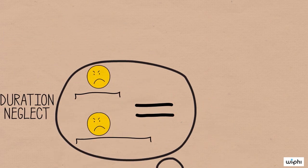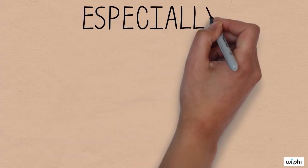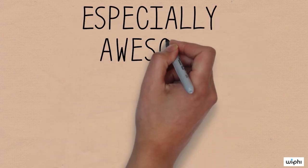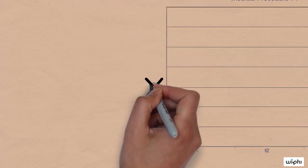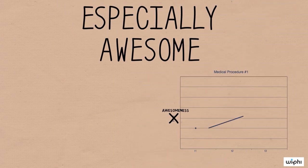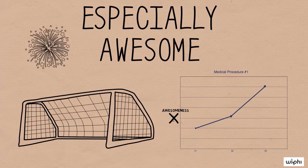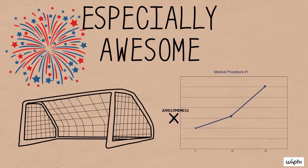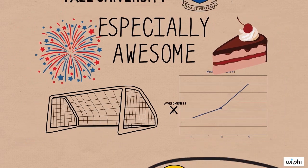The peak end effect also gives us some hints about how to make an event especially awesome. Since each event's goodness involves only its peak and its end point, we can make events particularly fun by making them end at their best point possible. In fact, lots of the events that we enjoy most involve ends that are also peaks. From the final winning goal to the firework finales, saving the best for last seems to make an event better. So next time you're having a really nice meal, be sure to save some room for dessert.